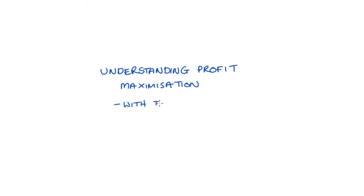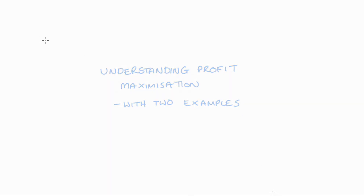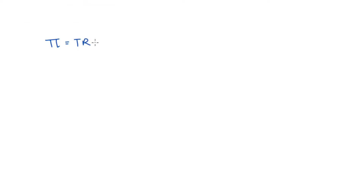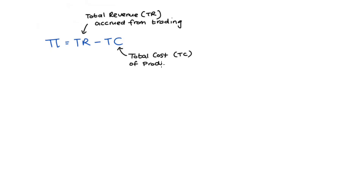Hi everyone. In this video I'm going to discuss understanding profit maximization and go through two examples. Let's start with our profit function. We have the firm's total revenue, TR — all of the money that the firm accrues from trading — minus the total cost of production, TC, and that's our profit, pi.